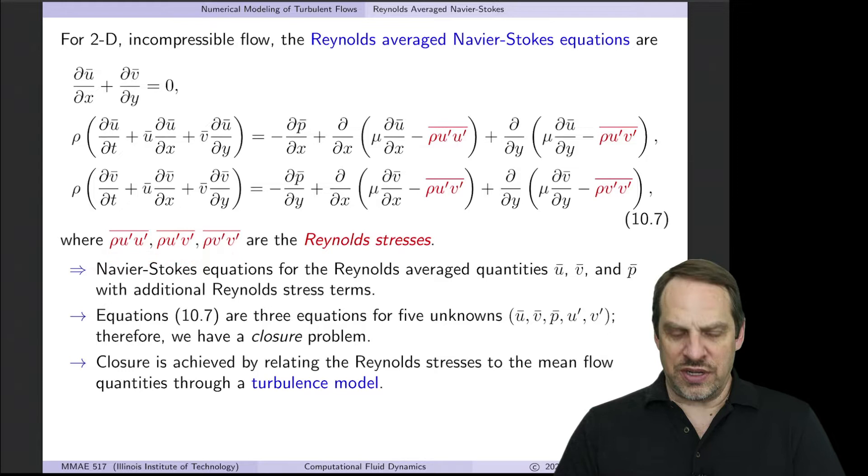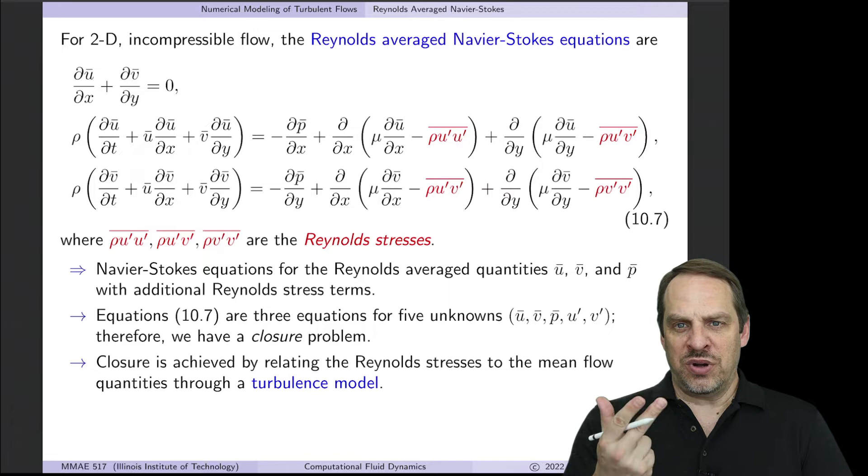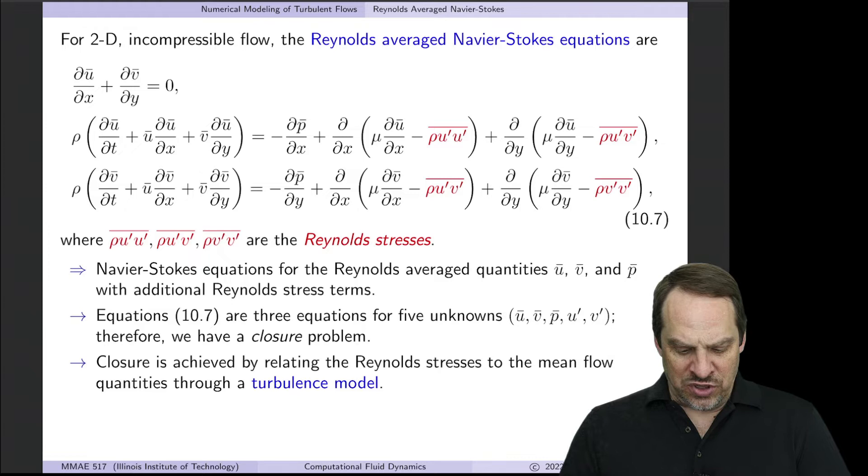And now we have these additional terms due to Reynolds averaging. These are called Reynolds stresses. They all involve prime variables, U-prime and V-prime. So here I've listed those three. Those are the Reynolds stresses.